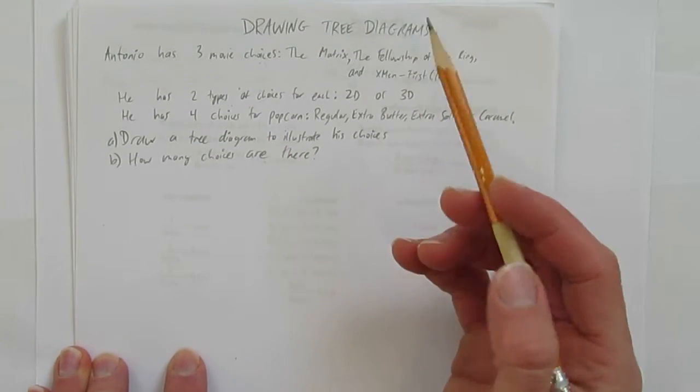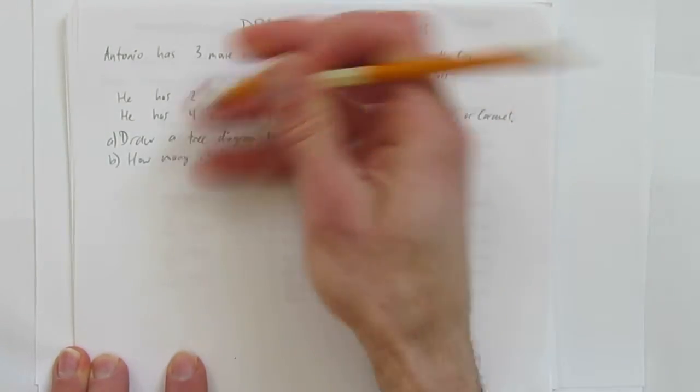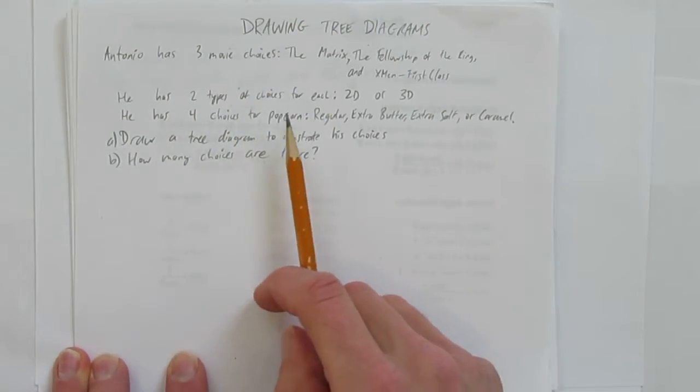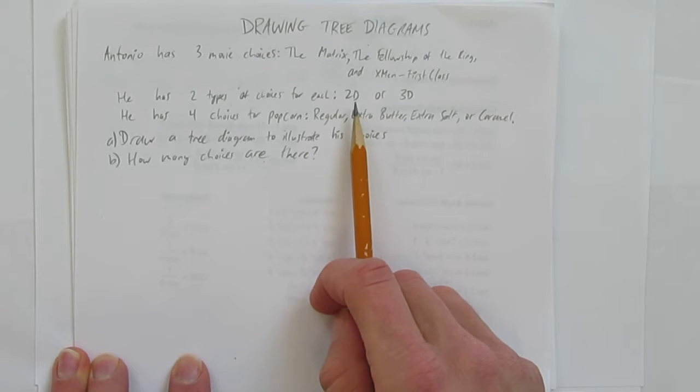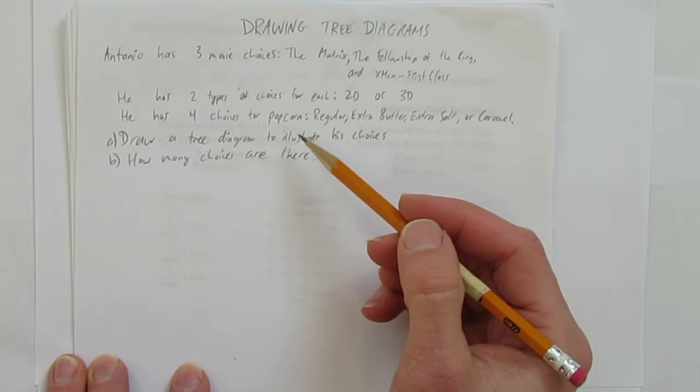He also has two types of choices for each. He has two types of choices for each movie. He can see it in 2D or see the movies in 3D. He's got to pick only one. And he has four choices for popcorn.